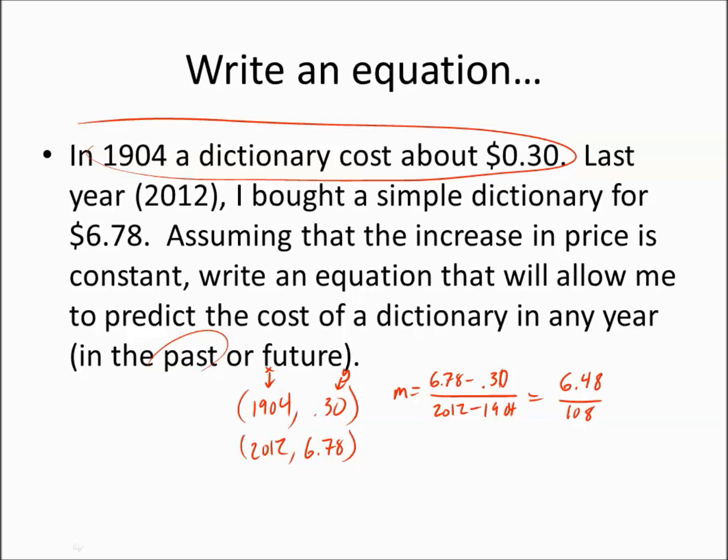Because we can go slope equals y2 minus y1 over x2 minus x1. And when we subtract, we get 6.48 over 2012 minus 1904, which is 108. When you divide those, you get 0.06. Which means that the cost over the years, it goes up $0.06 per year. So, we go y equals mx plus b. M is 0.06. So, y equals 0.06x plus b.